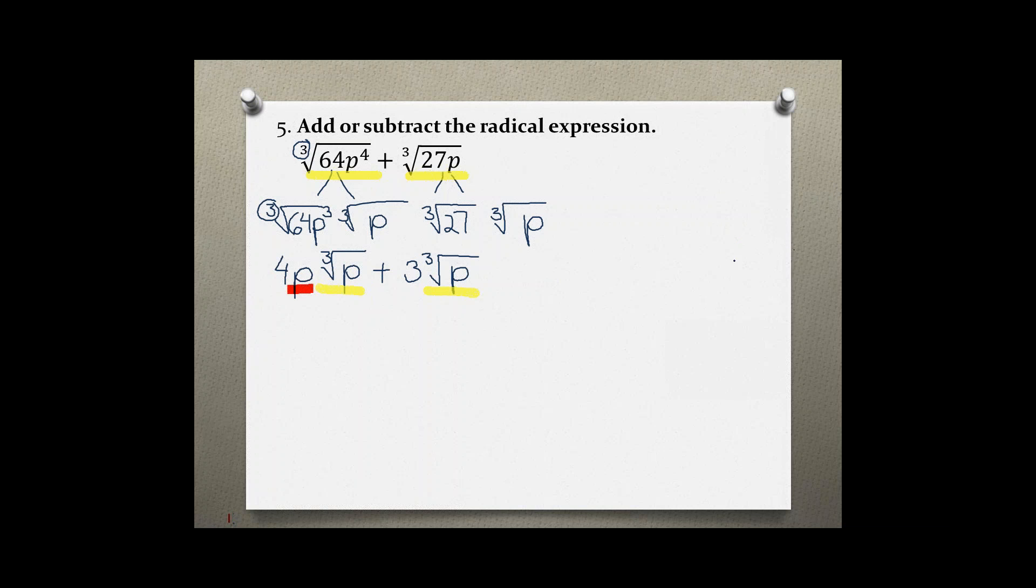What we can do is, because they both have the cube root of p, we could factor out what they have in common. So let's factor out the cube root of p, and then we are left with 4p plus 3.